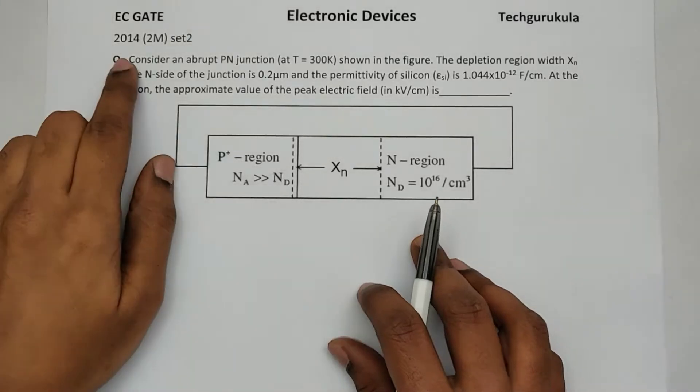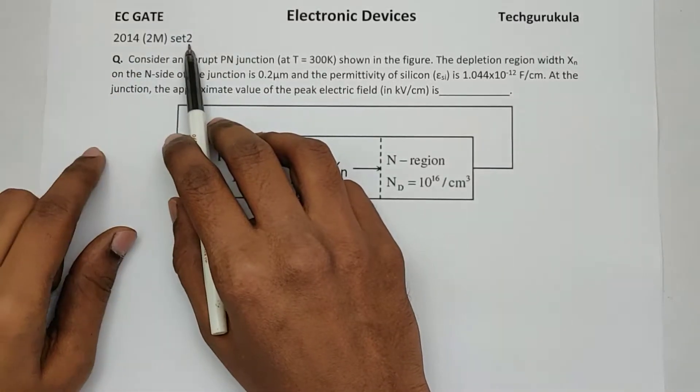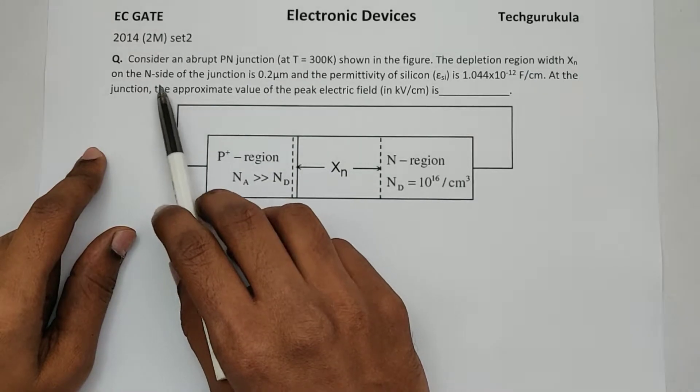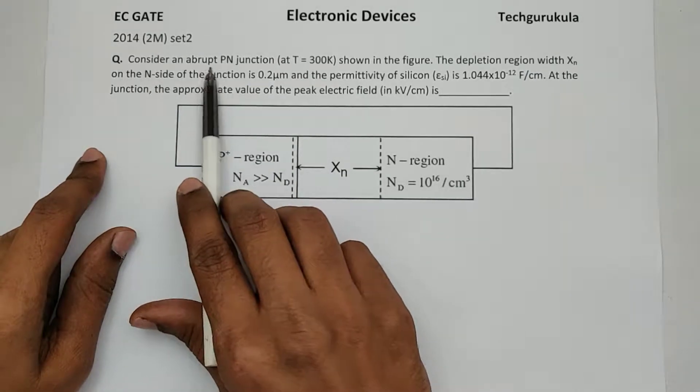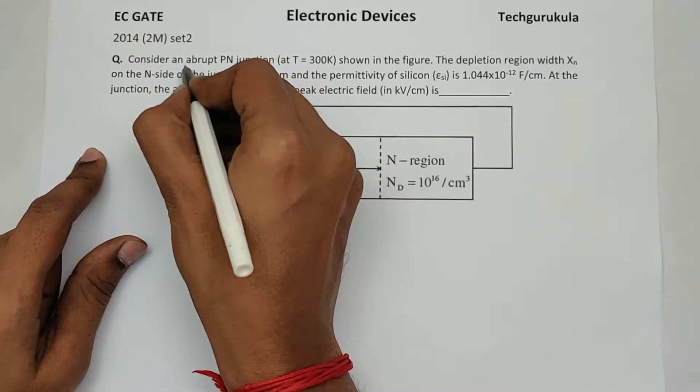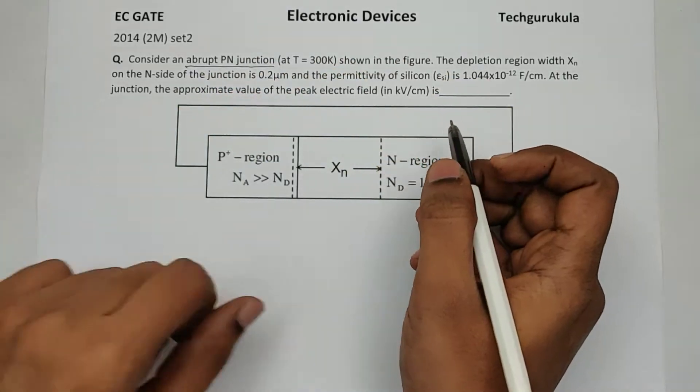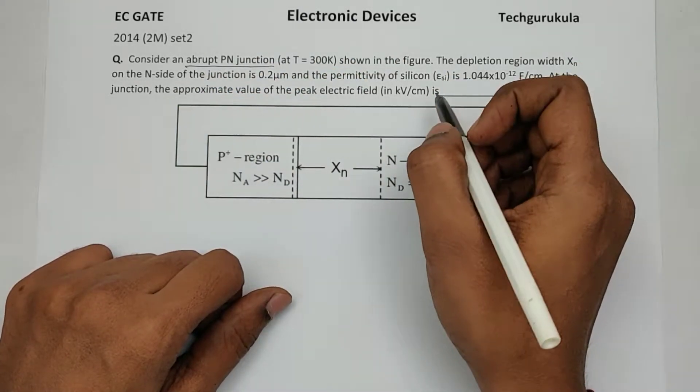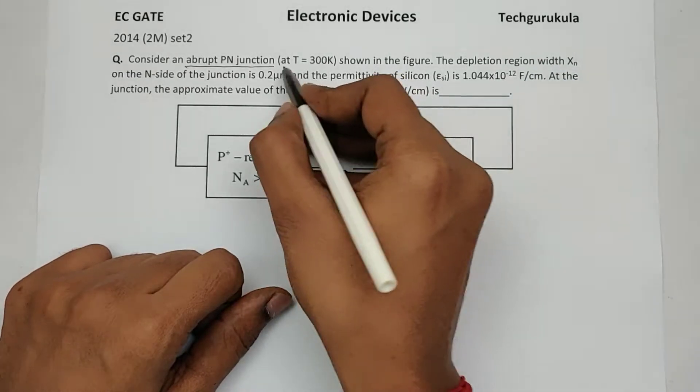This question came in 2014 for two marks in set two for EC GATE. Let's see the question. Consider an abrupt PN junction, abrupt PN junction which means both sides uniformly doped. That's what it means. Okay, at T equal to 300 Kelvin, room temperature.